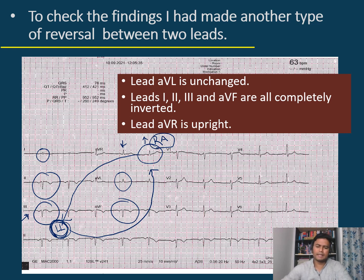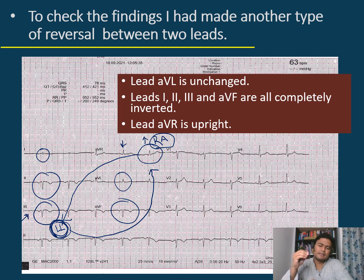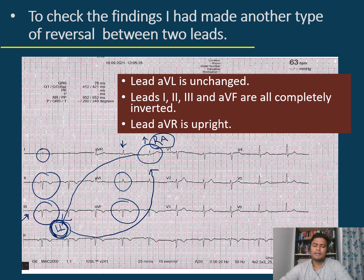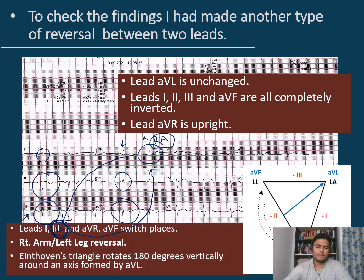RA is the mother of all leads because it is connected with lead I, lead II, and lead AVL. Whenever the RA moves away from its normal position — moving toward the left leg — almost all inferior leads become negative: lead II becomes negative, lead III becomes negative, and AVF becomes negative. In this RA to LL lead reversal, the Eindhoven triangle rotates 180 degrees vertically around an axis formed by AVL, because the left arm lead does not change position.